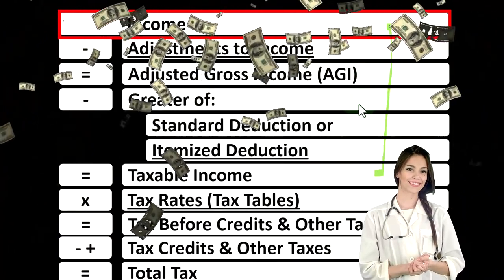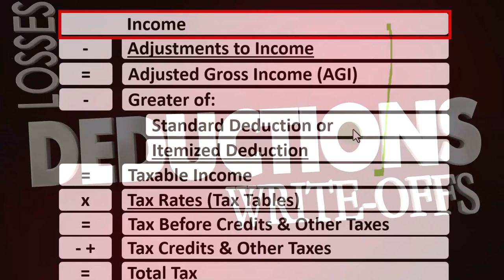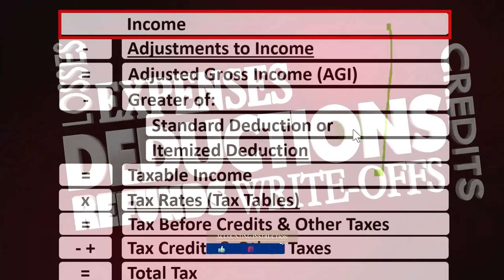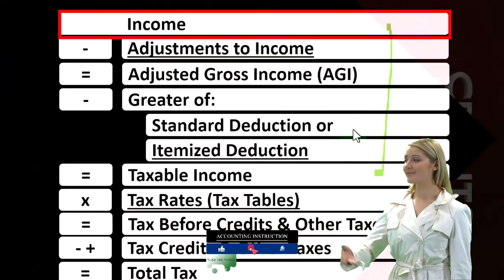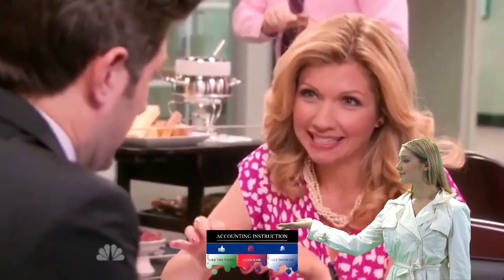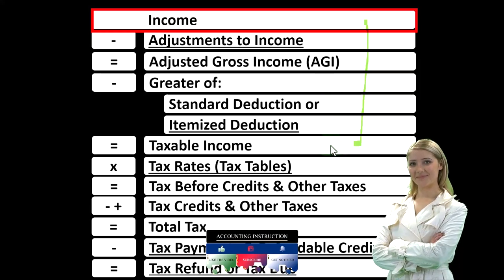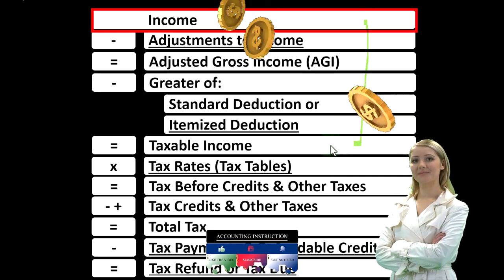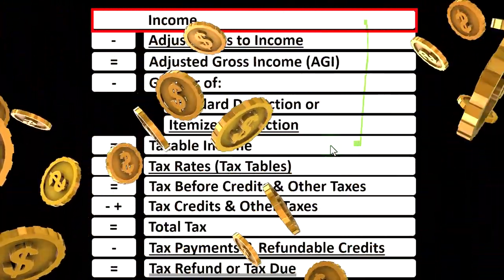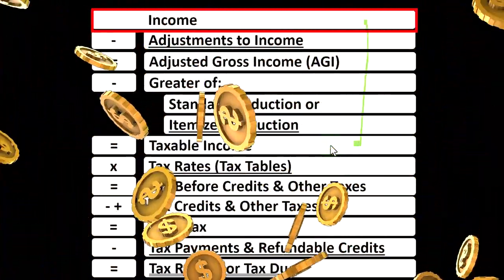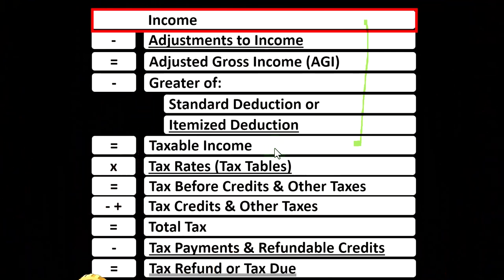Then we have the greater of the standard deduction or itemized deductions. You could think of these as similar to expenses. We're going to take the greater of these two — you could call these the below-the-line deductions. This gets us to taxable income, which is in essence equivalent to net income in a normal income statement.